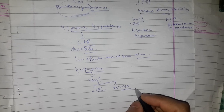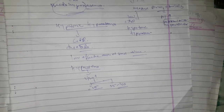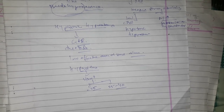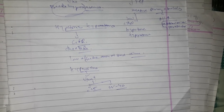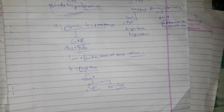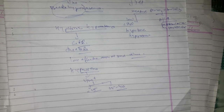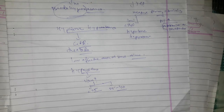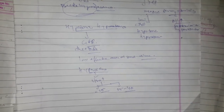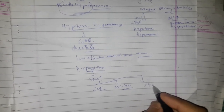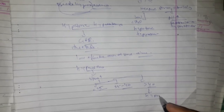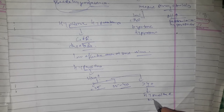Note: if serum sodium is 125 or less, we do not give isotonic saline; the evaluation can be delayed until sodium is slowly raised to higher levels. If urine sodium is greater than 40, it is still hypovolemic hyponatremia, but you need to investigate further.